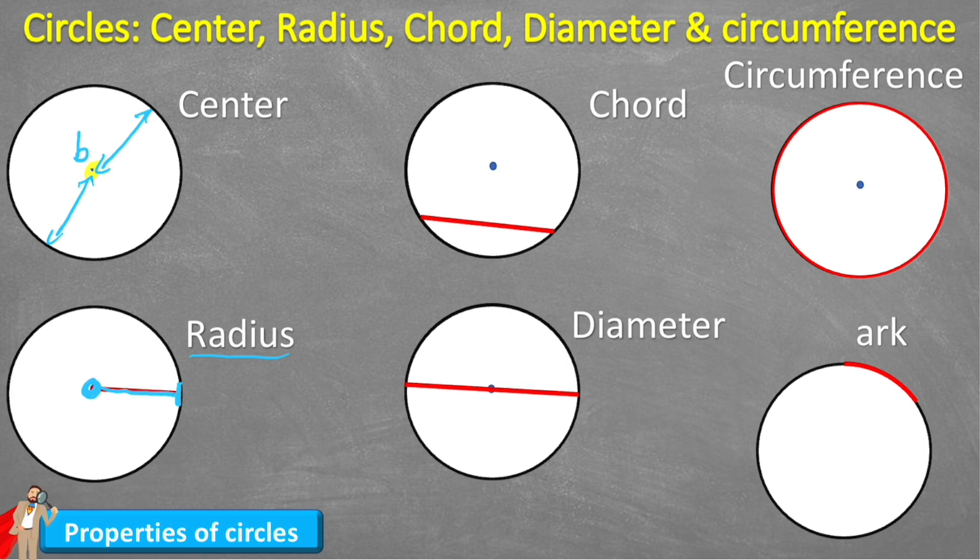So if we were to label the center B and label this point here on the end C then we could have a radius here of B and C. And we could show that that's a line segment by putting a line above it. That's how you show that line segment.